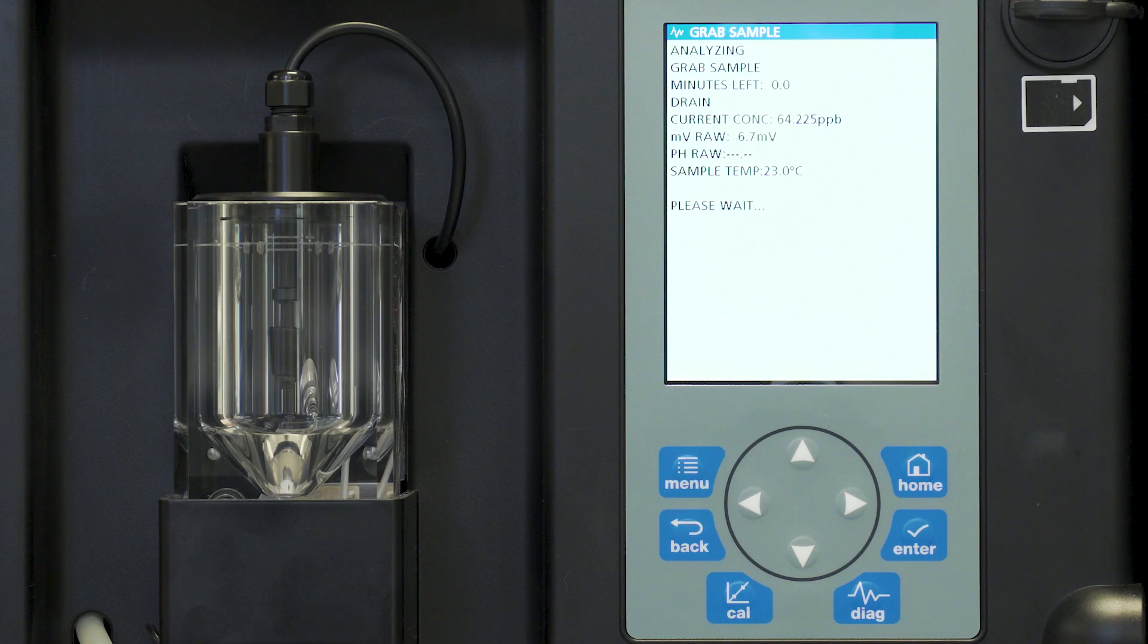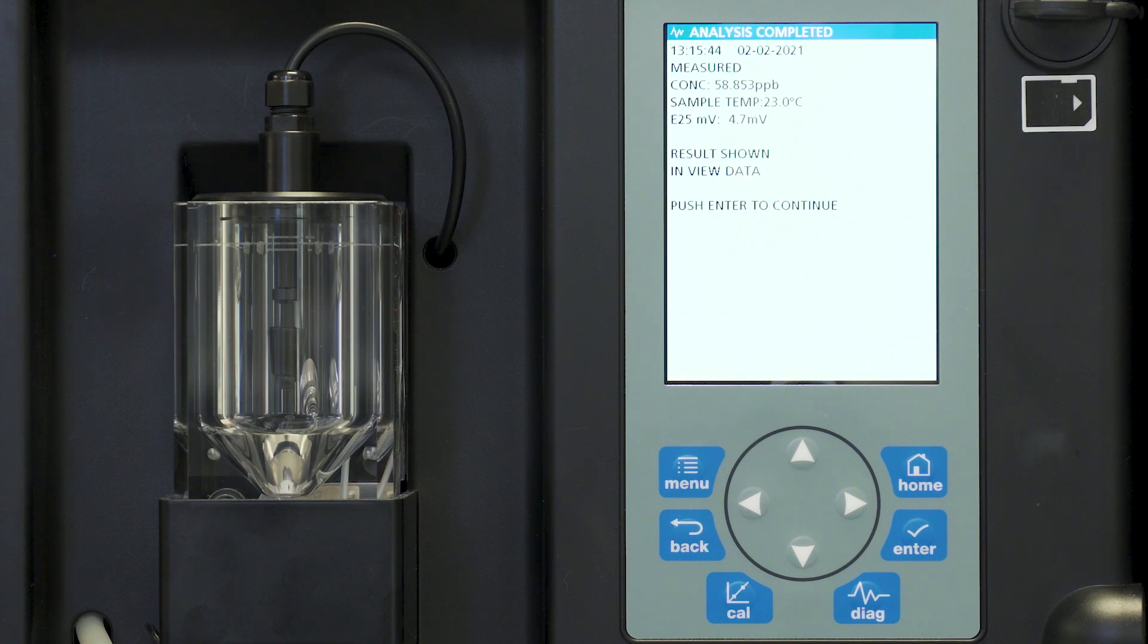So we're coming down to the end of our measurement. The measurement has now been finished and you see that we're measuring about 58.8 parts per billion sodium.